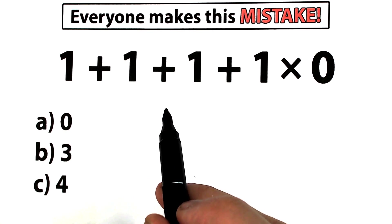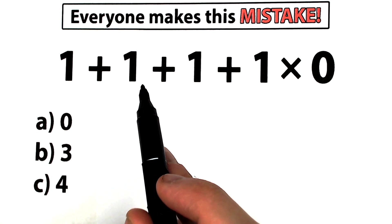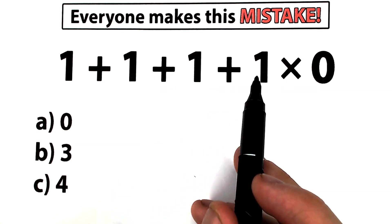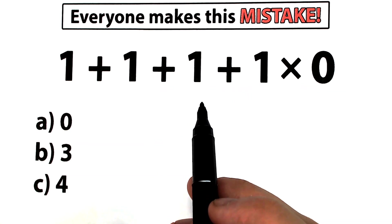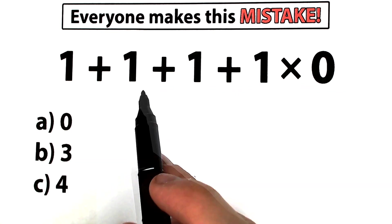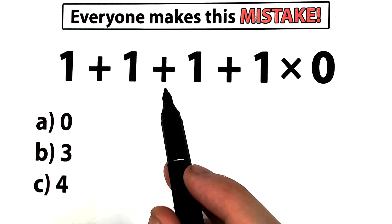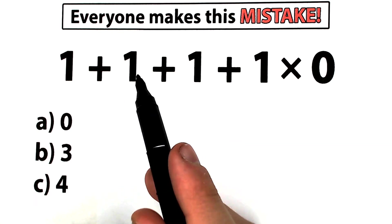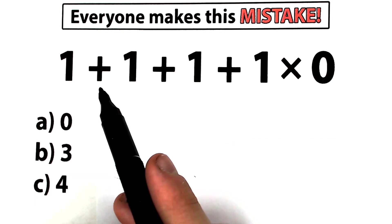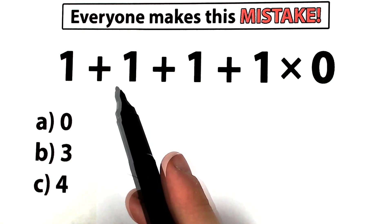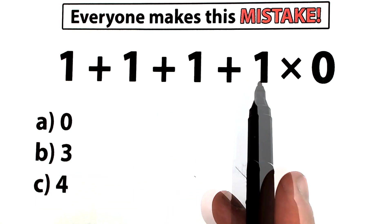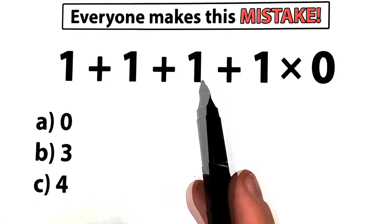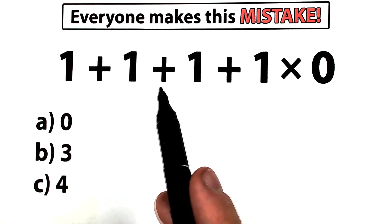So here's our question: 1 plus 1 plus 1 plus 1, times 0. On the first look this is a pretty easy question — everyone learns this stuff in the third grade, everyone knows about addition and multiplication, so it looks like everyone can solve this question.